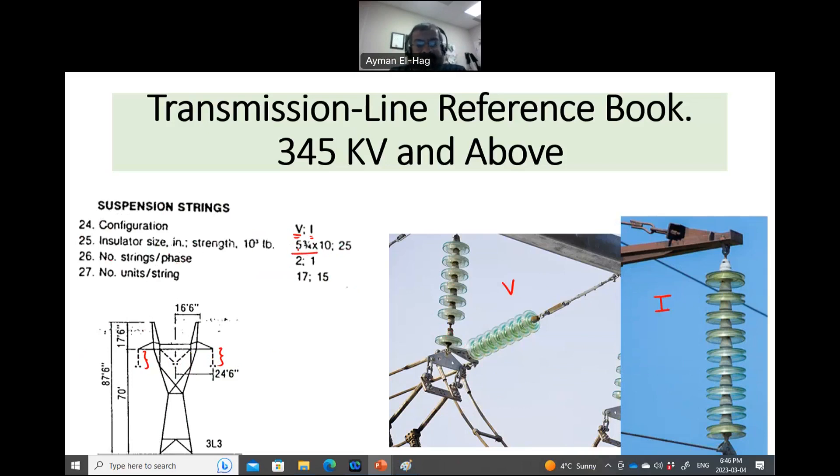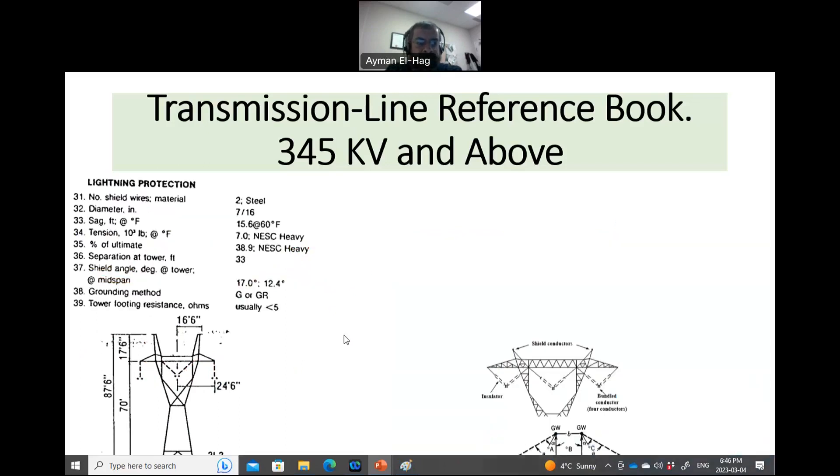Here is the 5 by 3.75 inch. This is the standard size for the cap and pin. You can see the insulators are composed of a string of cap and pins. Number of string per phase, two and one. Two, if you have a V shape, you will have two strings, as you can see here. If you have an I shape, you have only one string of insulators. Now, here is the number of units per string. So every string in the V shape or in the I, how many of those cap and pins? We can count: one, two, three, and so on and so forth. So this is something about the insulators that we use in overhead lines.